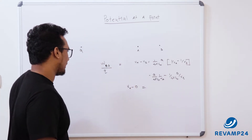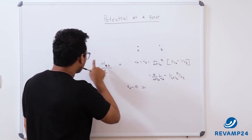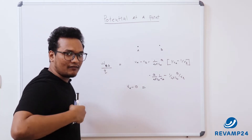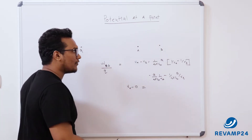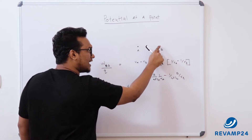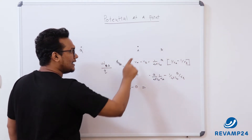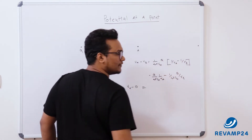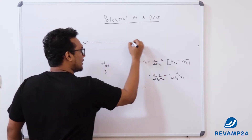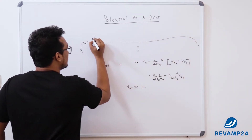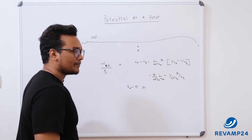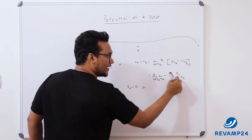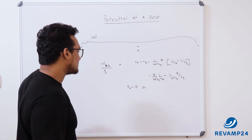Let me explain it. q cannot be made 0 because q is the source charge — we only have control over the positions. So instead of bringing the charge from b to a, let's say we keep b at infinity. If the first point is at infinity, then the total distance becomes infinity. If r_b is infinity, then any value divided by infinity equals 0.